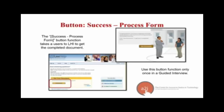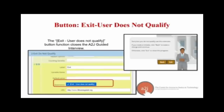The first and most common exit is success process form. You set all exiting options in the button section — it's one of the destination options in brackets. When you click the folder to select the destination question, 'success process form' is one of the options. It takes your end user to LawHelp Interactive to get their completed document. Use this button only once per guided interview — there should be only one point where success process form is the destination, and it should be the very last question.